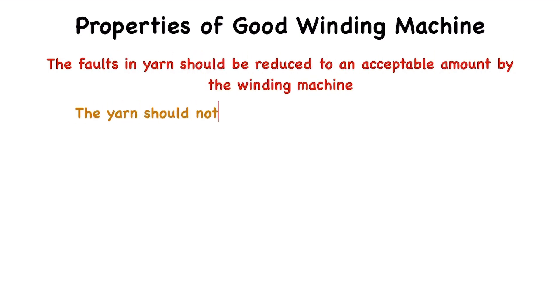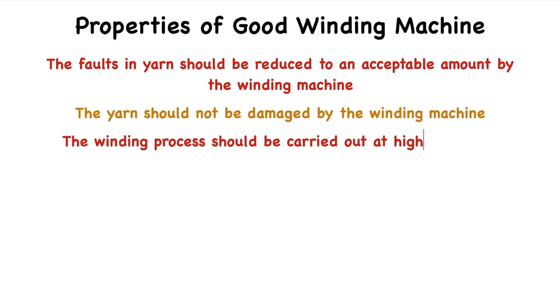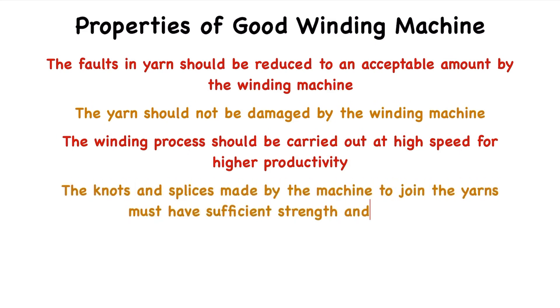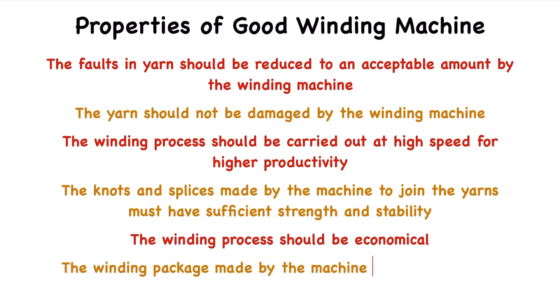A good winding machine should have the following properties: Faults in yarn should be reduced to an acceptable amount by the winding machine. The yarn should not be damaged by the winding machine. Winding process should be carried out at high speed for higher productivity. Knots and splices made by the machine to join the yarns must have sufficient strength and stability. Winding process should be economical. Winding package made by the machine should not be too tight or too loose.